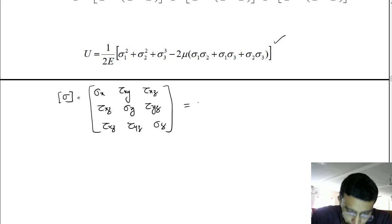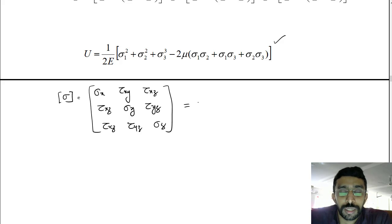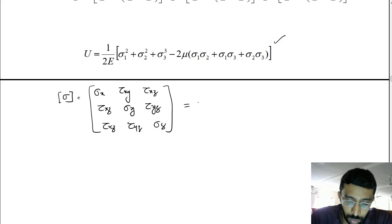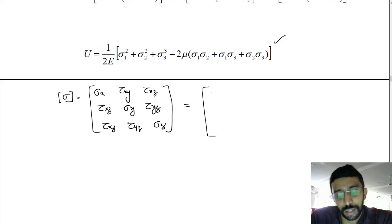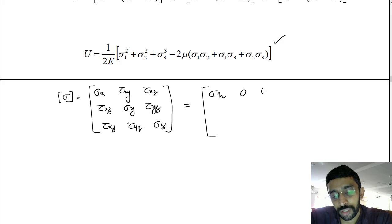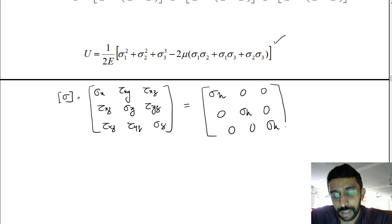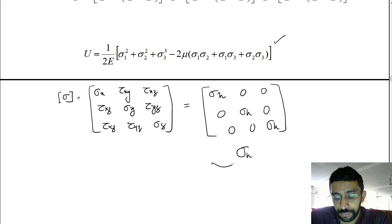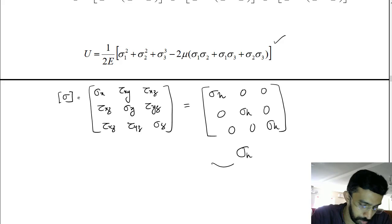This general state of stress can be split into two parts. The first is called the hydrostatic part, which is a diagonal matrix with sigma h in each normal component and zeros in all the shear components.